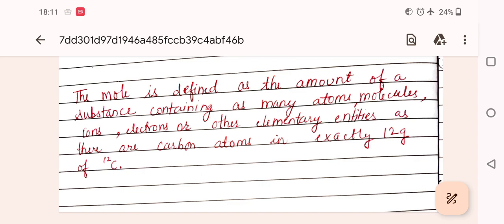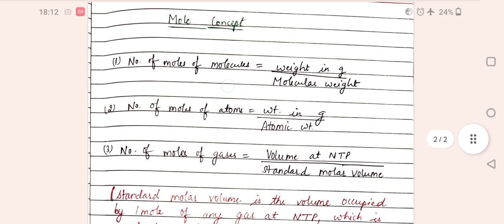In exactly 12 grams of 12C. 12C is an isotope of carbon. If we have to calculate the number of moles of molecules, there are some formulas.